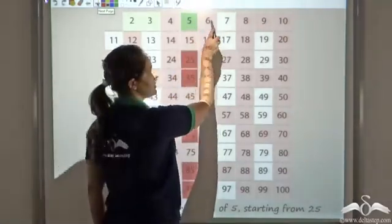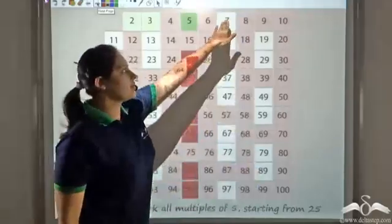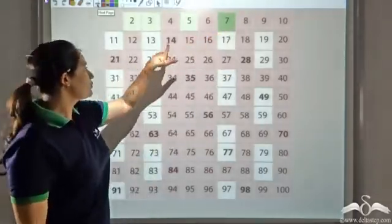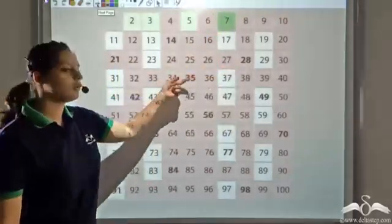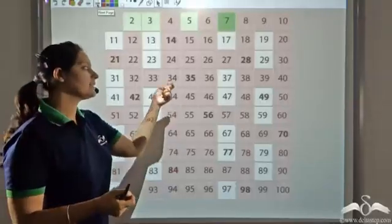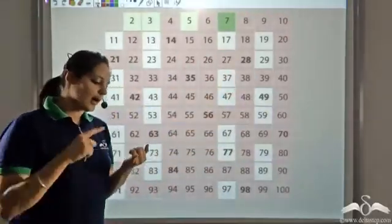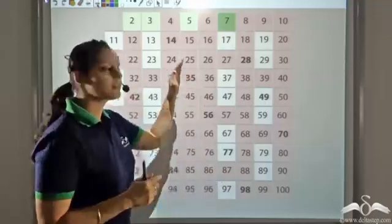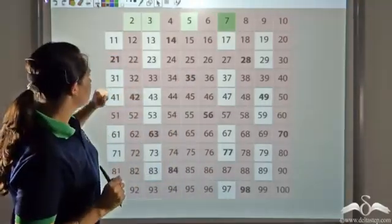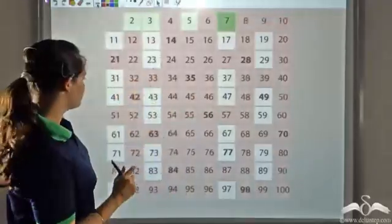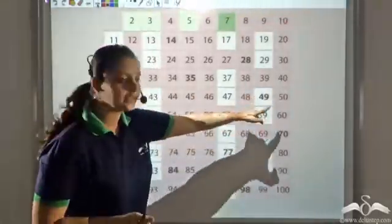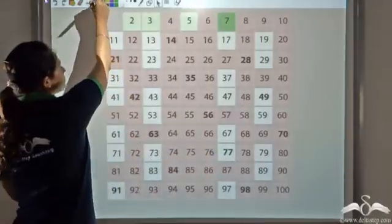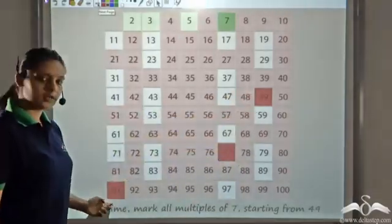Next I am left with 7 — since 6 is already removed, 7 becomes prime. The numbers in bold are multiples of 7, meaning 7 is a factor of all of them. So apart from 1 and the number itself, they have one more factor which is 7, making them composite. I remove these composite numbers. Some have already been removed; I remove the remaining ones — I see 49 and 77 have not been removed yet — so I remove those remaining numbers.